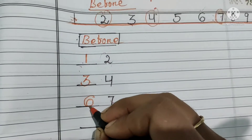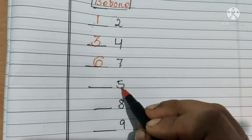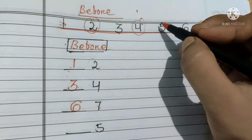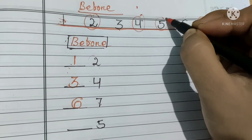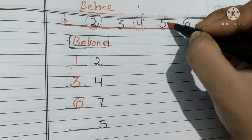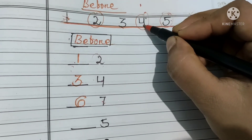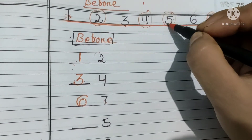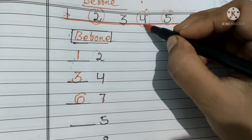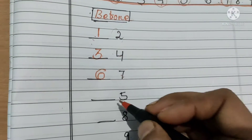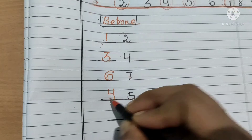7 se pahle 6 aata hai. Next comes number 5. Hum number line mein dekh lete hain kahan pe number 5 hai. Here is number 5. Number 5 se pahle number 4 aata hai. What comes before number 5? Number 4. Haam idhar number 4 likhenge. 5 se pahle 4 aata hai.